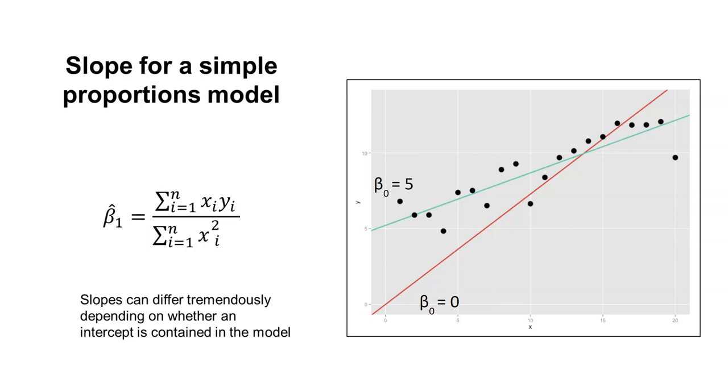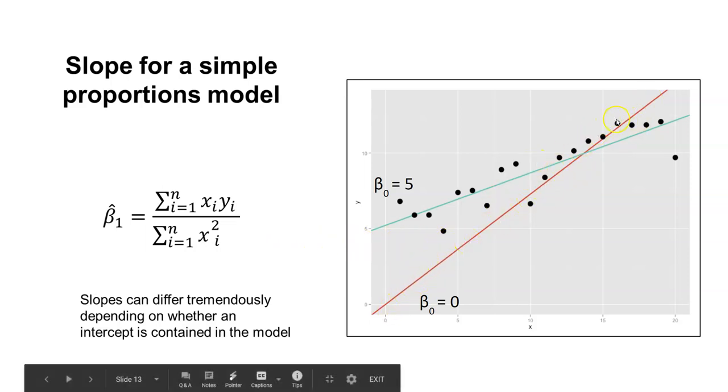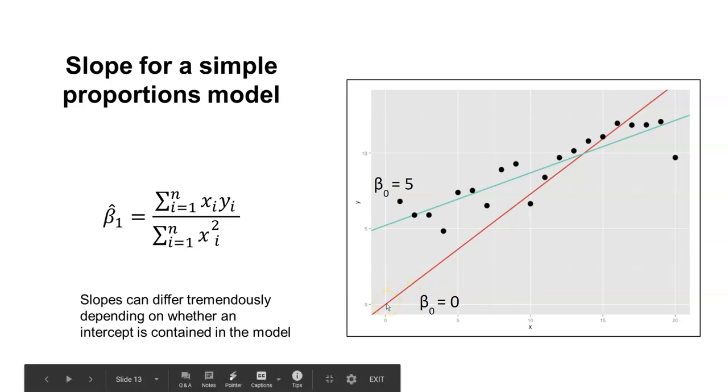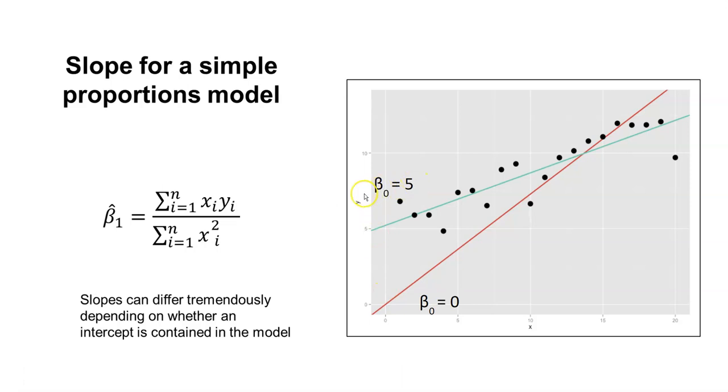The slopes can differ tremendously depending on whether or not an intercept is contained in the model. The line in red represents a no-intercept model where beta 0 is set to 0—the line goes through the point (0,0), the origin. Here's where beta 0 equals 5, the y-intercept where the line crosses the y-axis is at 5. Depending on whether you set the intercept to 0 or 5, you can end up with a very different looking line. This is why the positioning of the regression line is really important, and it can influence your predictions tremendously.